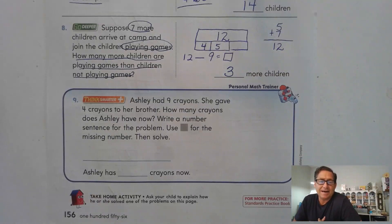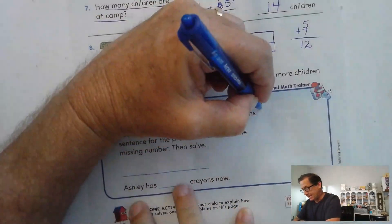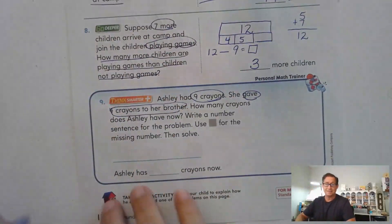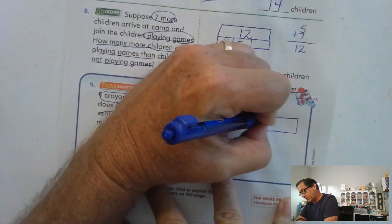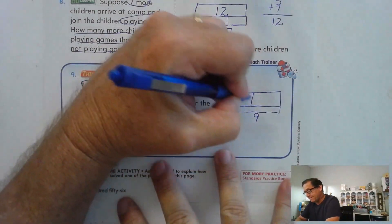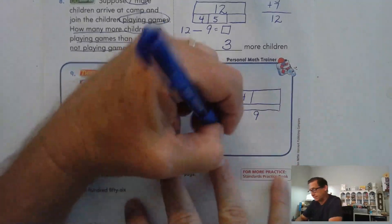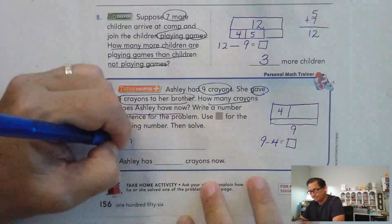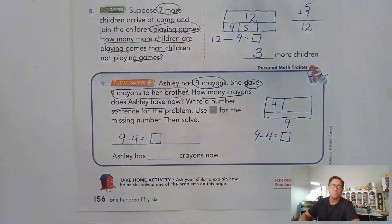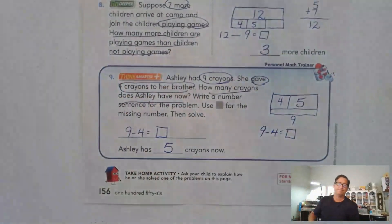Number 9: Ashley had 9 crayons. She gave 4 crayons to her brother. How many crayons does Ashley have now? Write a number sentence and use a square for the missing number and solve. She had 9, gave away 4 — that's a subtraction problem: 9 minus 4 equals what? 4 plus what is 9? That's 5.